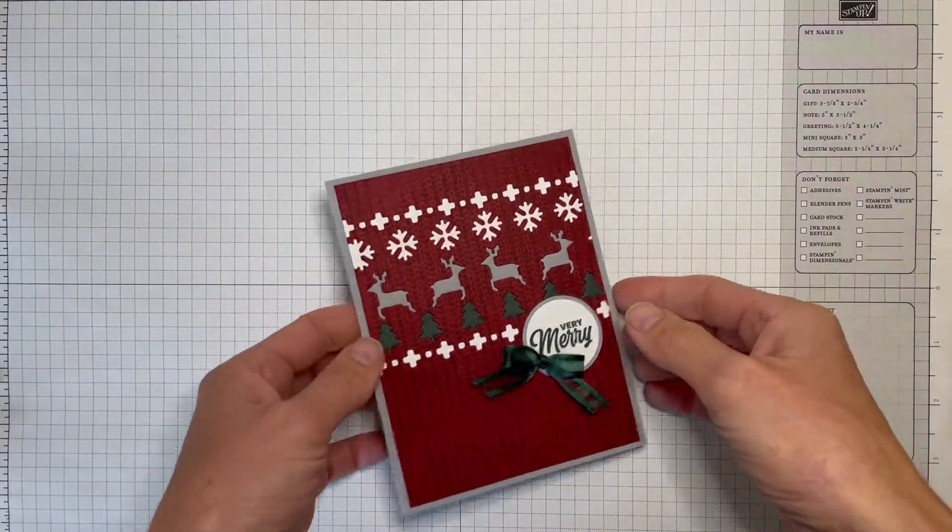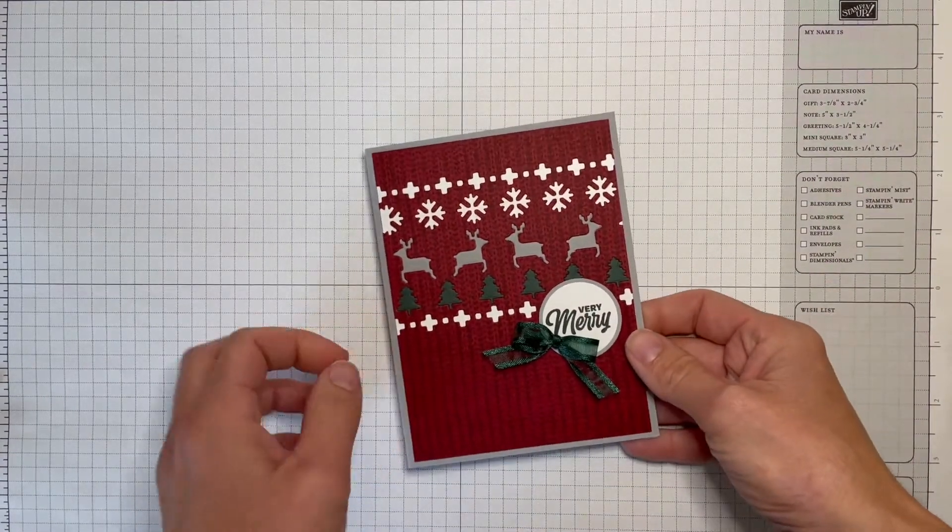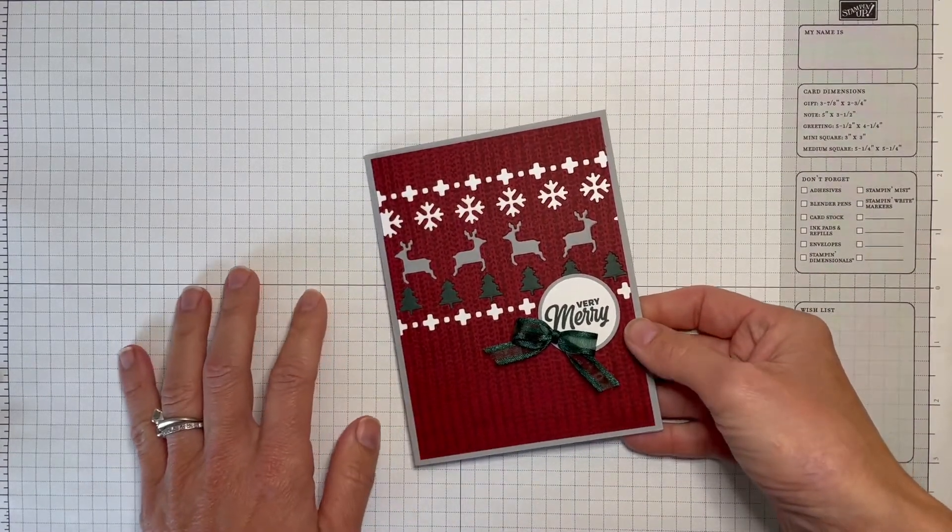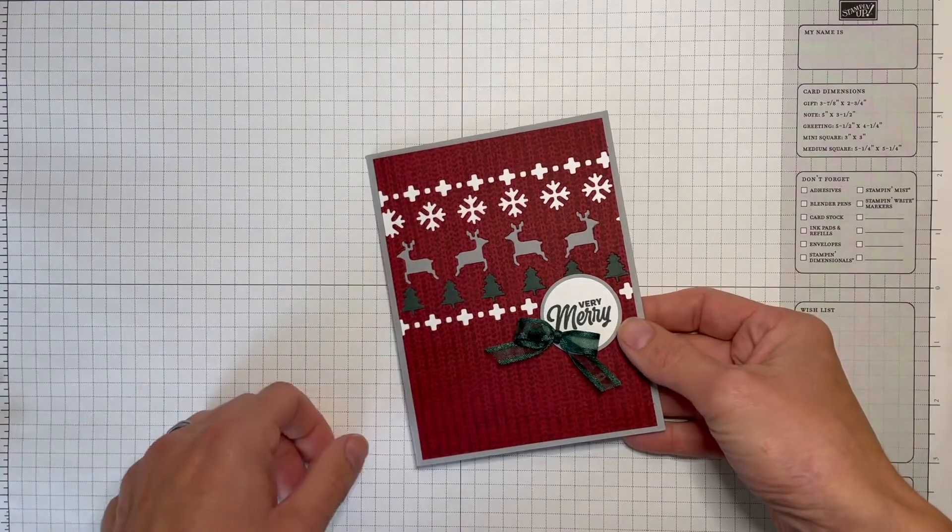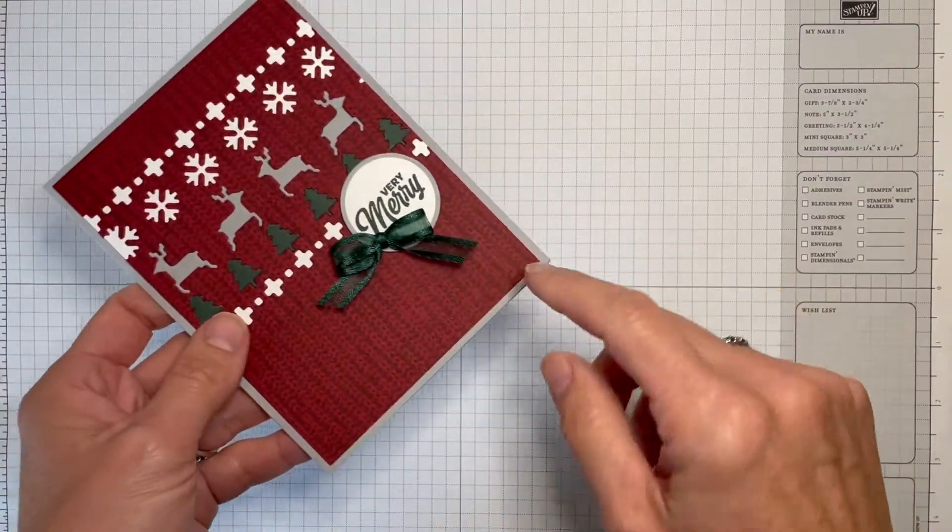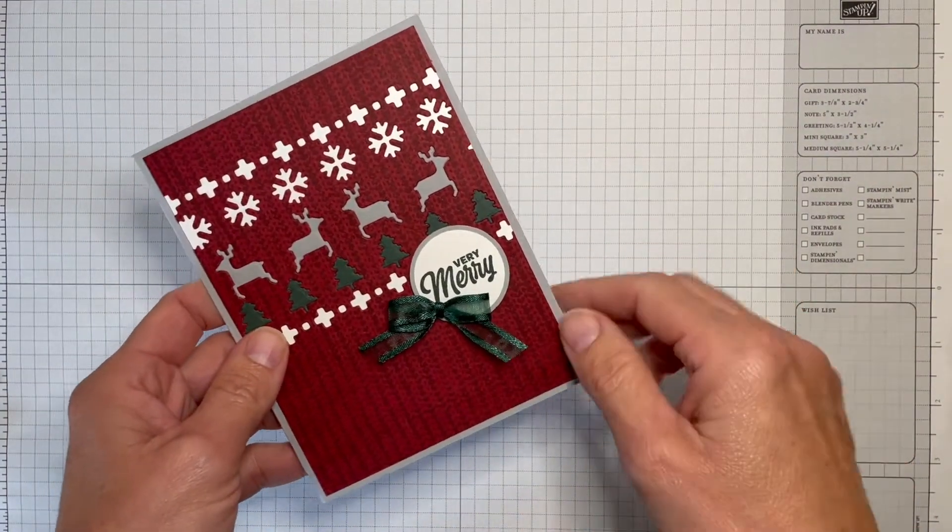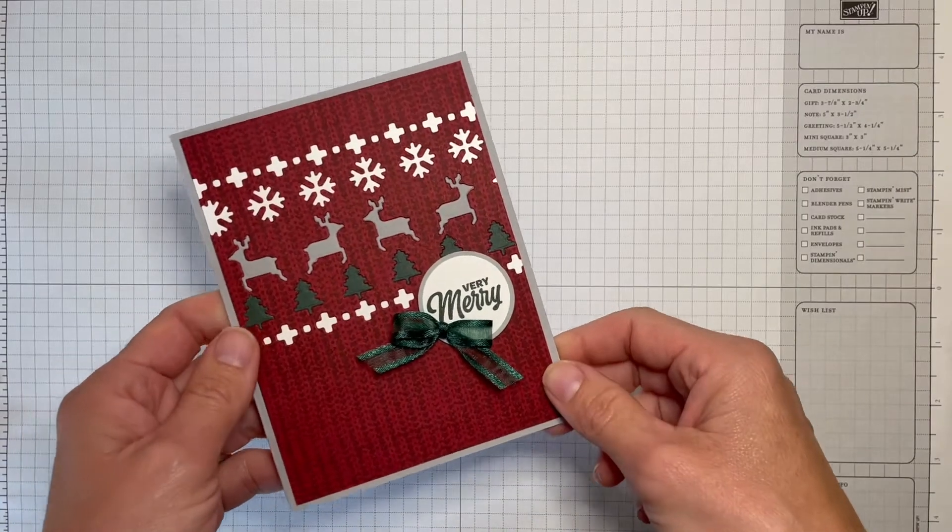Hi stampers, welcome back to Did You Stamp Today with Amanda Mertz. Today we are going to learn how to do a fork bow like this one that's here on this card that I've shared today on my blog.